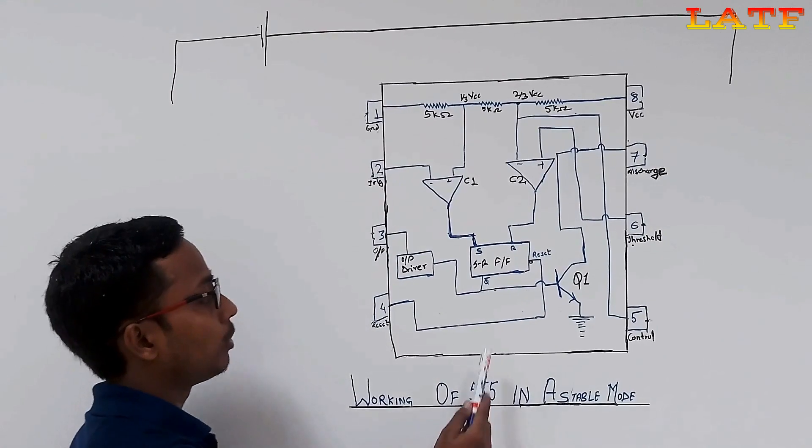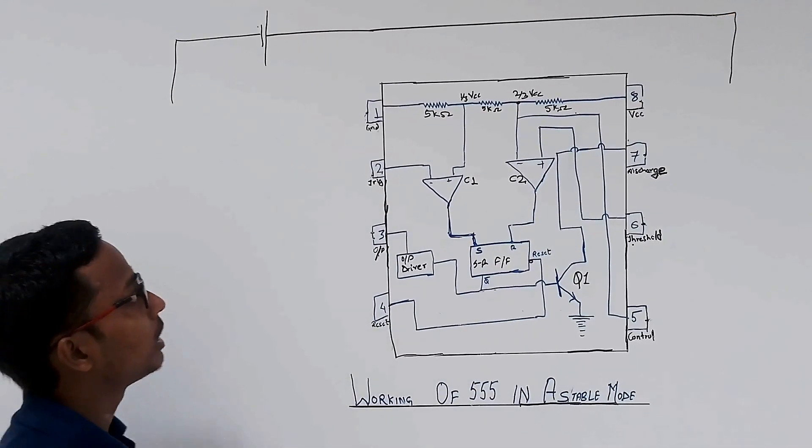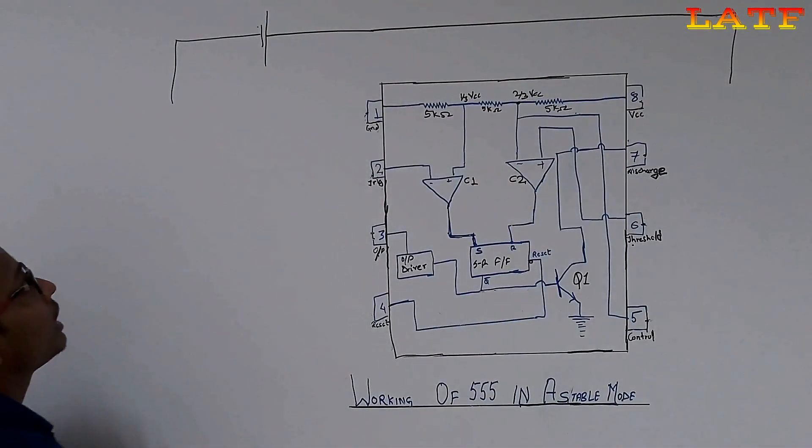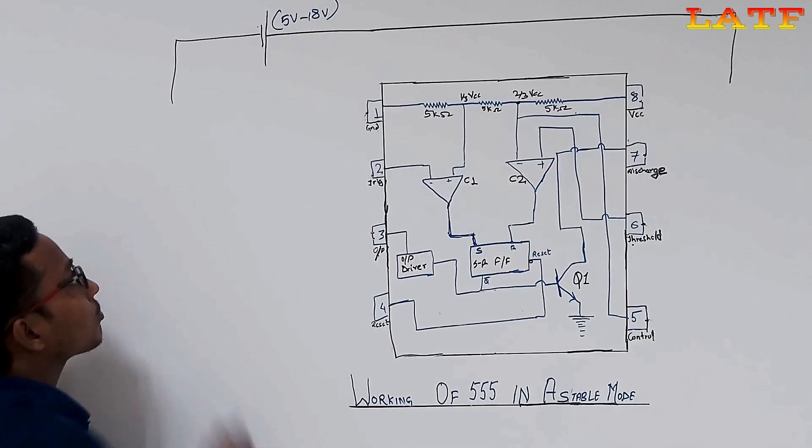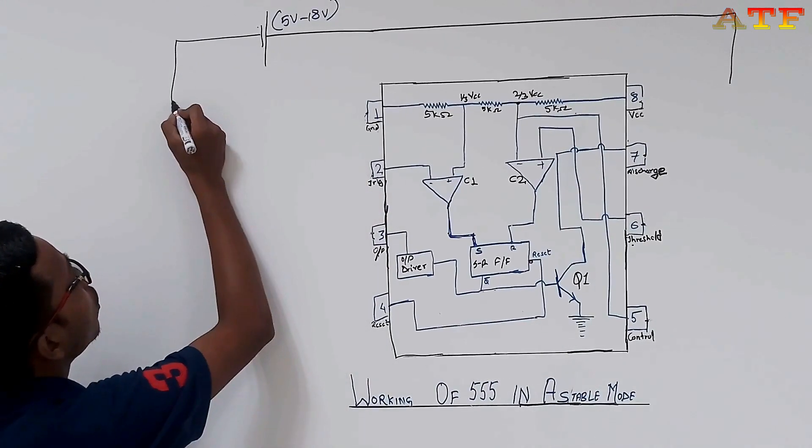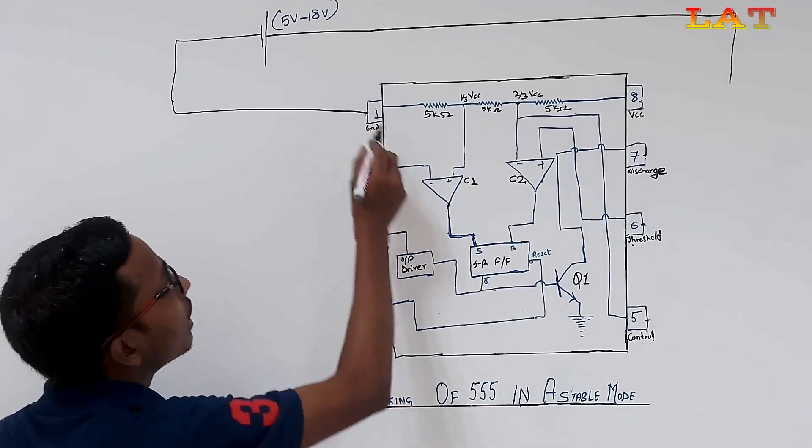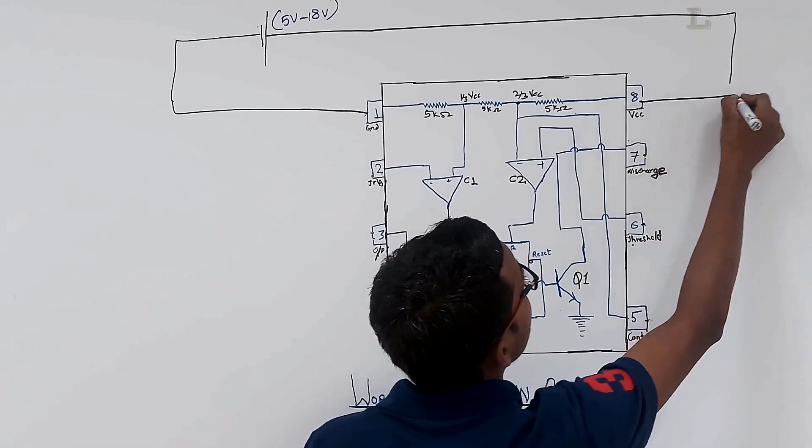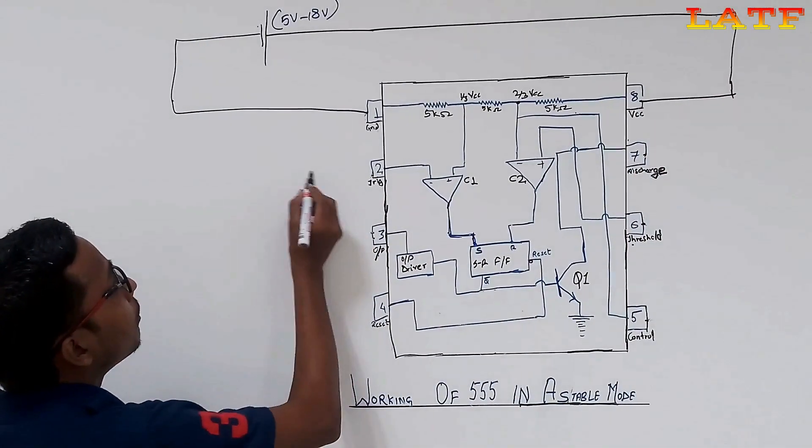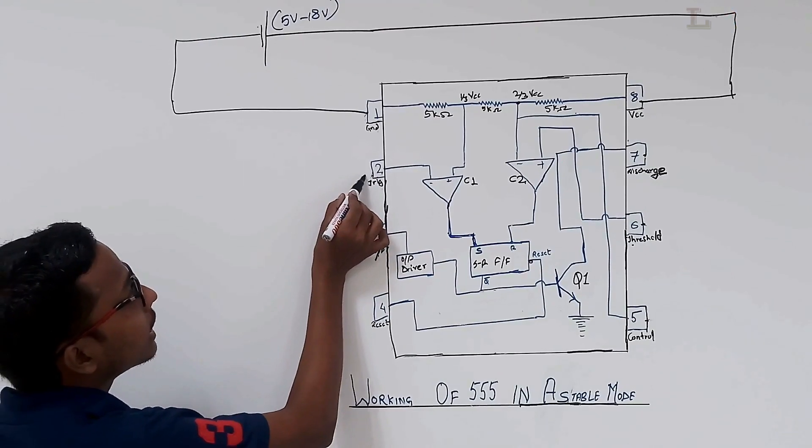This is the block diagram of 555 timer IC. Here, we have a battery whose value ranges from 5V to 18V and somewhere it is mentioned 5V to 15V. Connect pin number 1, i.e. ground pin of 555 to ground of battery and VCC, i.e. pin number 8 to positive terminal of battery.